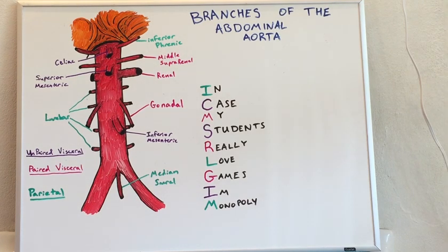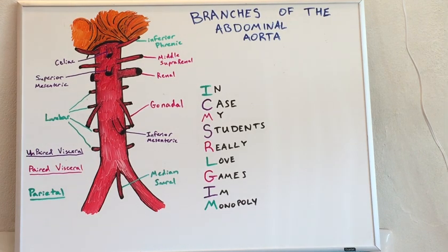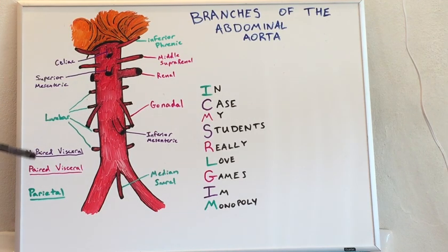Today's lecture is on the branches of the abdominal aorta. When the descending aorta passes through the diaphragm, traveling from the thoracic cavity into the abdominal cavity, it has a series of branches leading all the way through the abdomen.